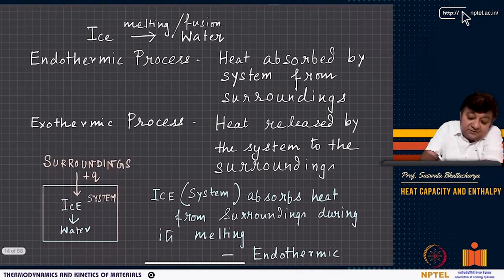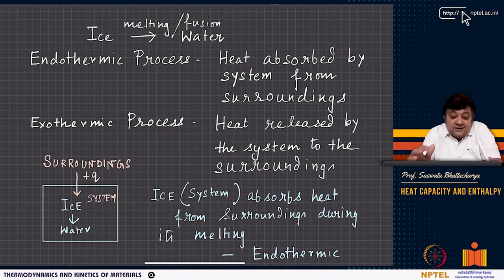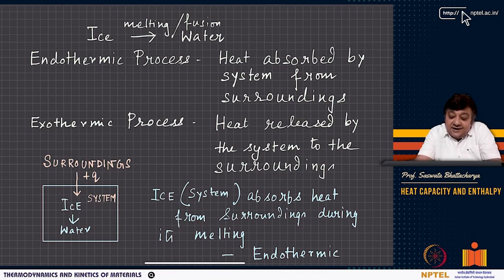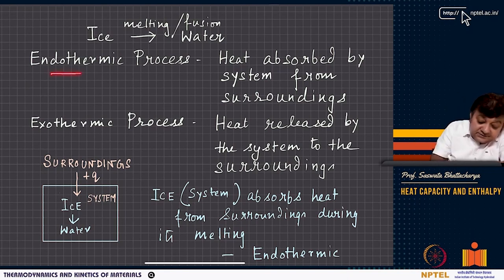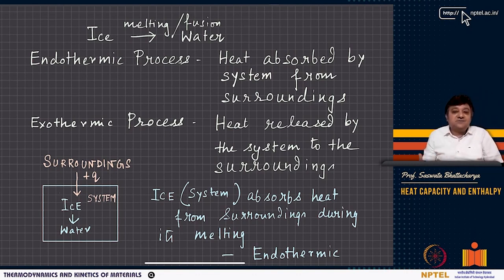At one atmosphere, one mole of ice requires 6000 J. Since pressure is fixed at 1 atm, Q = delta H = +6000 J. To find delta U, we use delta H = delta U + P * delta V. Delta V = V_water minus V_ice = 0.018 minus 0.0196 = minus 1.6 × 10⁻³ liters. One liter = 0.001 m³, and 1 atmosphere = 101325 Pa.